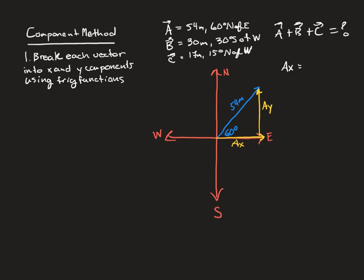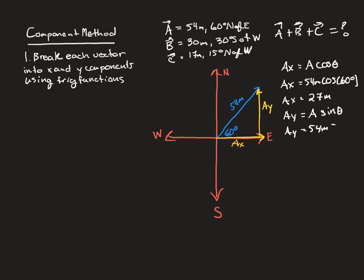A of x equals the magnitude of the vector times the cosine of the angle, because cosine is adjacent over hypotenuse. So the x component of vector A is 27 meters. To find the y component, I take the magnitude times the sine of the angle, because sine is opposite over hypotenuse. Taking 54 meters times the sine of 60 degrees gives 46.8 meters.